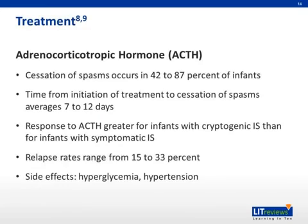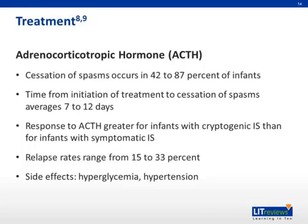Treatment. The mainstay of treatment for infantile spasms is ACTH. Dosing at 150 units per meter squared has been shown to cause cessation of spasms in 42 to 87% of infants. The average time from initiation of treatment to cessation of spasms is typically 7 to 12 days. In general, response to ACTH is greater for infants with cryptogenic IS than for infants with symptomatic infantile spasms. Relapse rates range from 15 to 33%. Side effects common with ACTH treatment include hyperglycemia and hypertension.